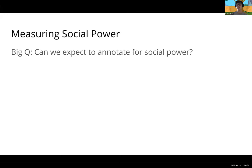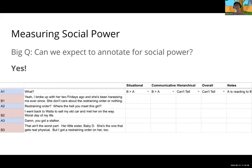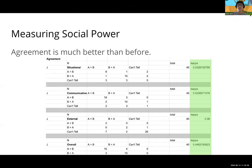We set up an annotation task with a sample of 43 three-turn-per-dialogue pairs — each person speaks three times — and John and I annotated these over several rounds. We looked at situational, communicative, and external power, plus an overall sense of power. The agreements are much better than before: the lowest kappa was 0.36 compared to the earlier 0.2. This points to the fact that there is some signal — social power does manifest itself in dialogue and you can tease it out.